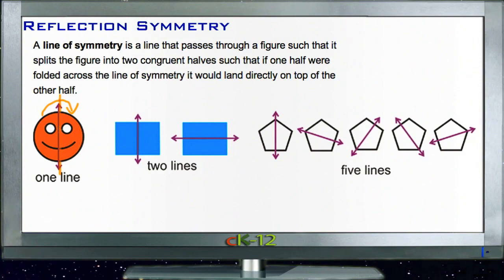They line up exactly. So this is a line of symmetry because the figure is the same on the right-hand side and on the left-hand side of that line.